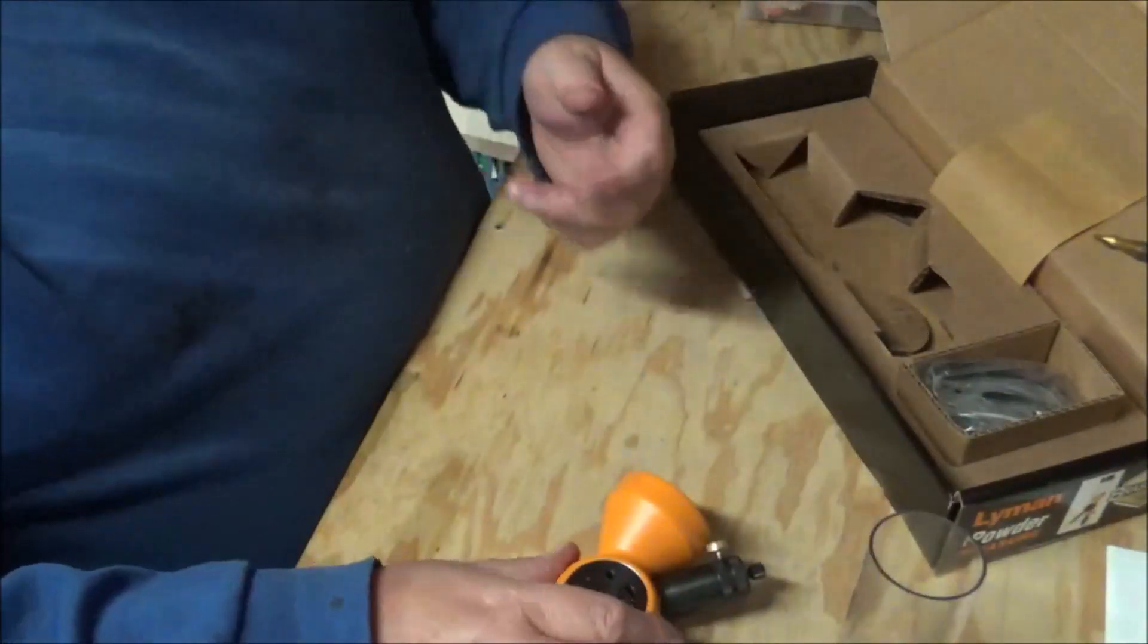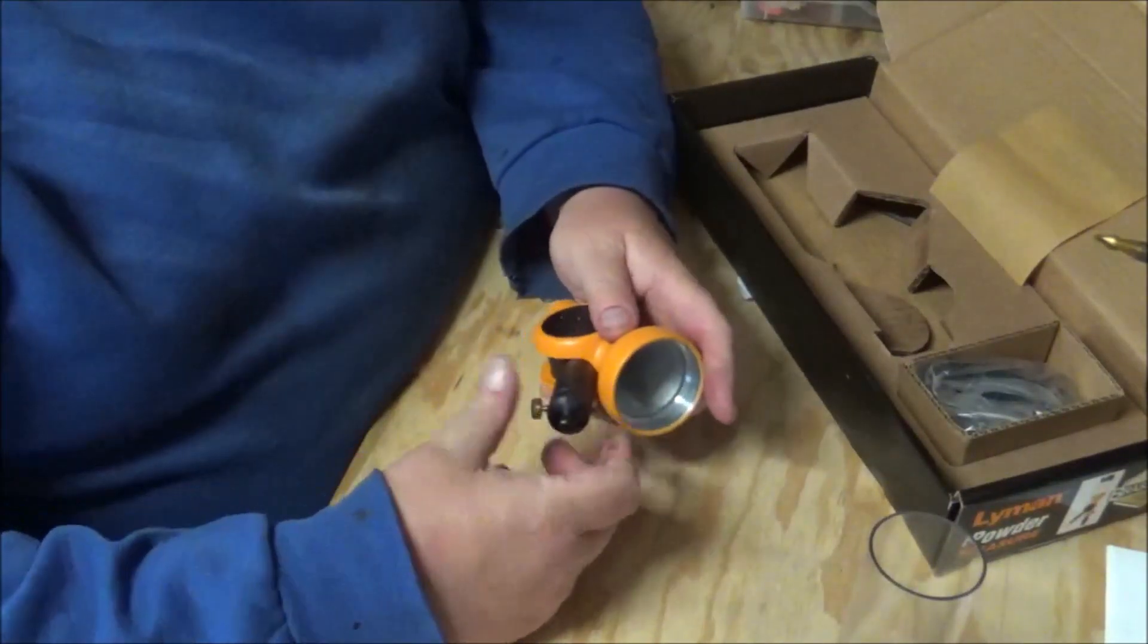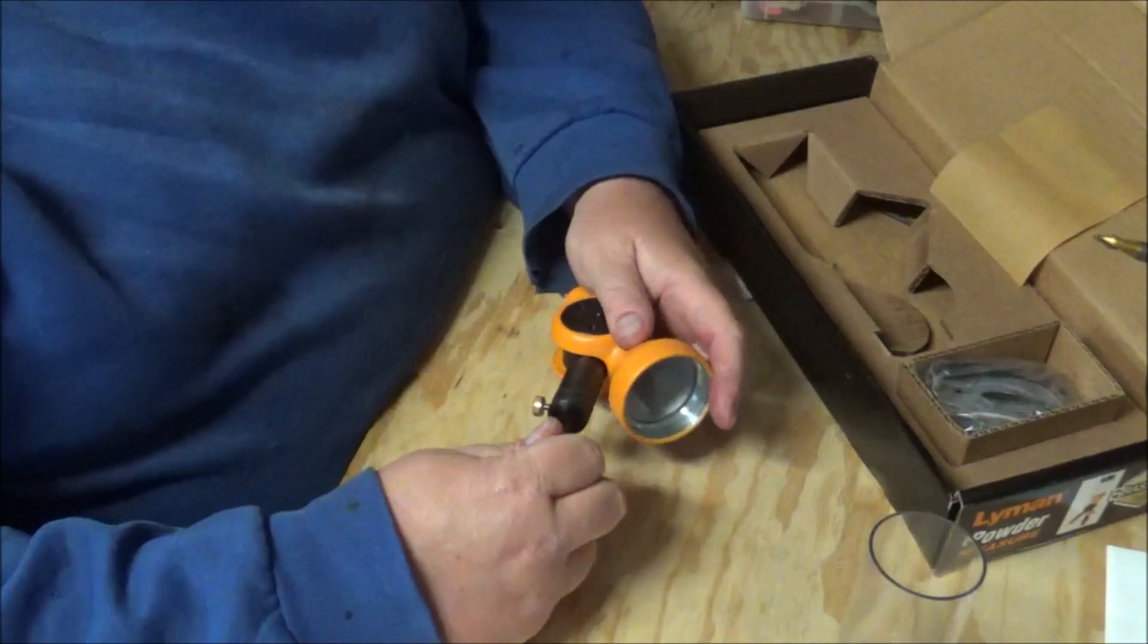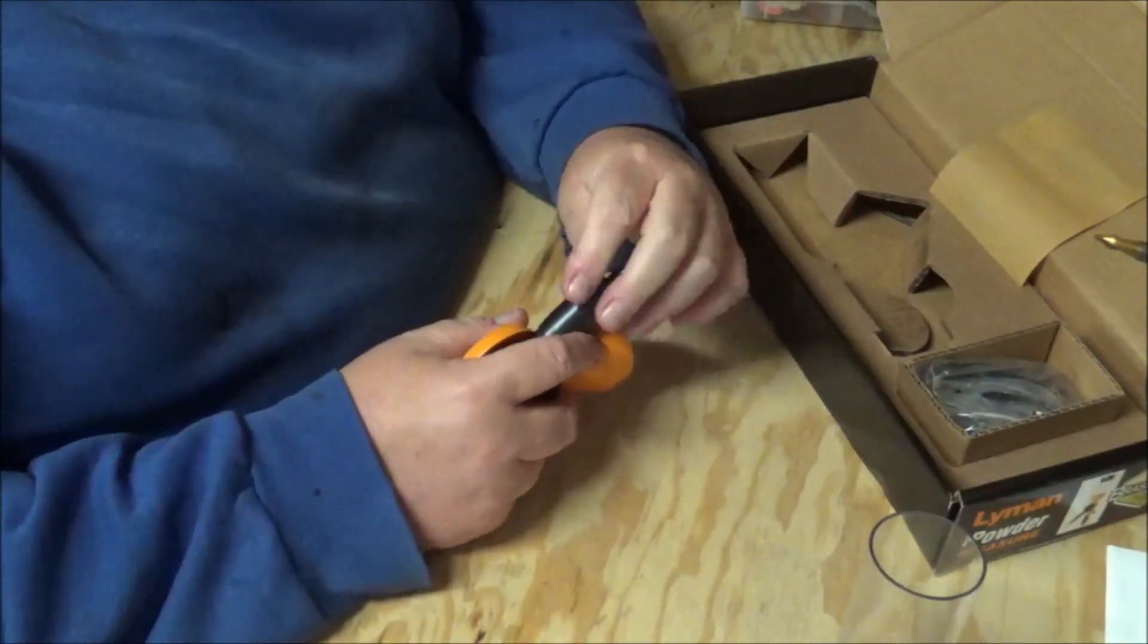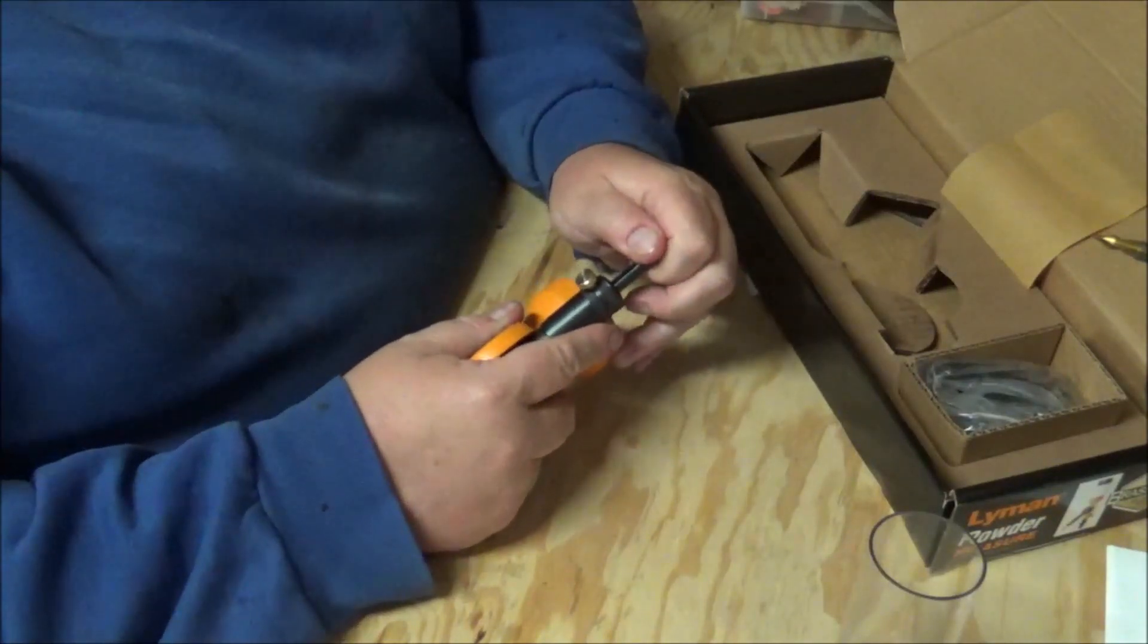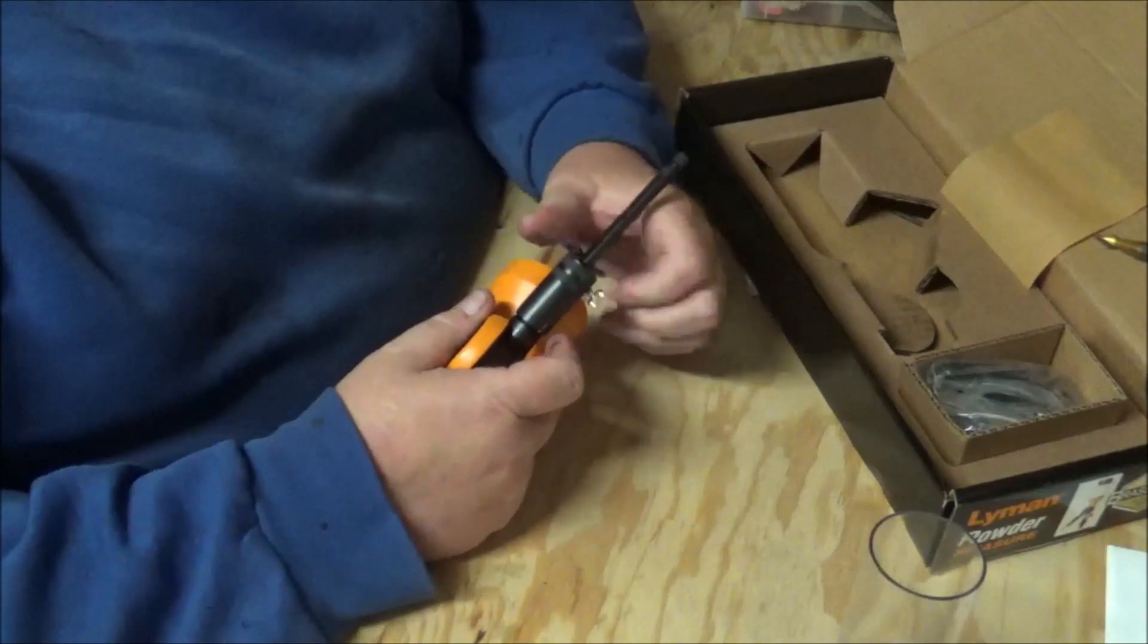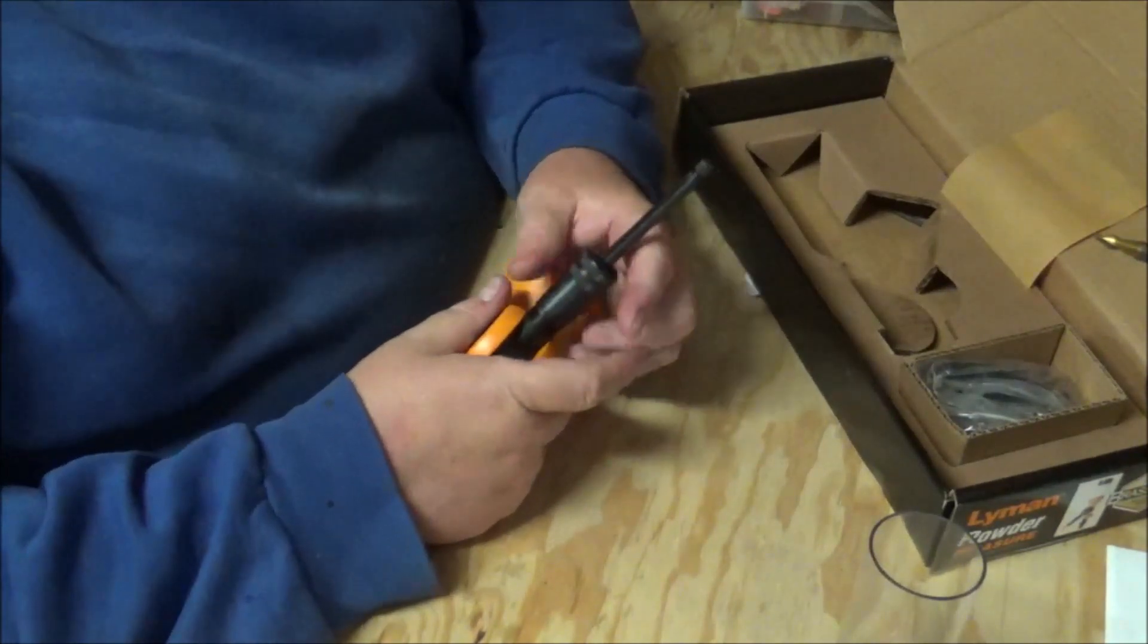didn't come with it. The Hornady didn't come with it. So it has a metering rod which is a little stubborn, but I'm sure that'll - I'm sure that's just an o-ring seal on there, so it might be a little stiff for a